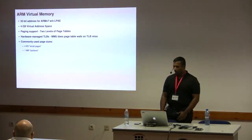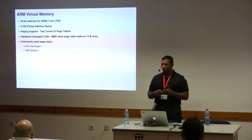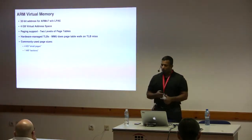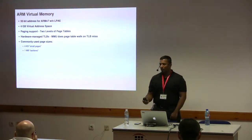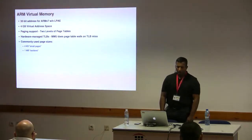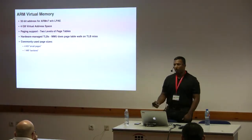On ARMv7, you're looking at a 32-bit address space — 4 gigabytes — unless using LPAE (large physical address extensions), which gives a 40-bit address. ARM has paging support with two levels of page tables, called translation tables in the docs, and a hardware-managed TLB that does the page table walk on a TLB miss. The commonly used page sizes are 4KB small pages and 1MB sections.